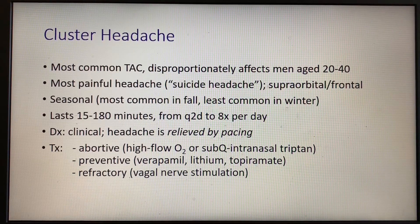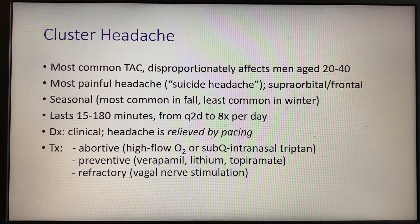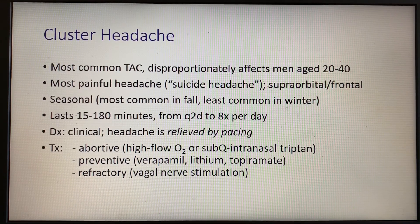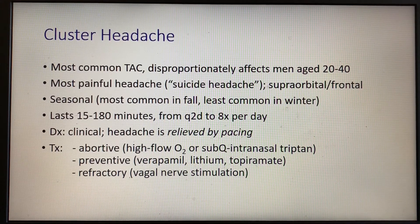Treatment varies based on what goal you're trying to achieve. For acute abortive treatment, you can opt for high-flow O2 — several of these patients actually keep O2 in their home. You can also use subcutaneous or intranasal triptans. For long-term preventative treatment, you would opt for verapamil or lithium. There's also some evidence for topiramate. And for refractory cases, you could consider referral for vagal nerve stimulation.